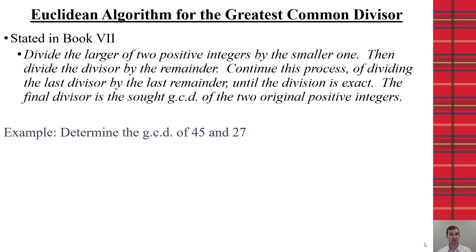So, let's see this in practice. If I had 45 and 27, I'm going to take my larger, 45, divide by my smaller, 27. That does not divide evenly, so I have a remainder of 18.